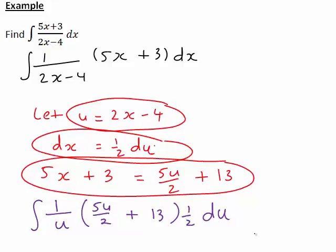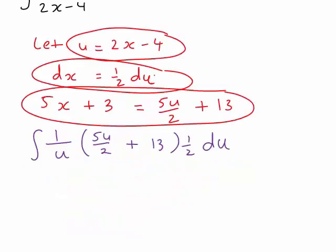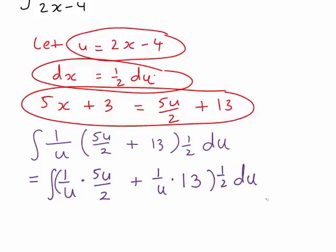We now have an integral, as required, fully in terms of u and du. Though it might not look like that initially, when we tidy this up, it will actually be a lot simpler to evaluate than the expression in its original form. To simplify, let's first expand the brackets. So integral of 1 divided by u times 5u divided by 2 plus 1 divided by u times 13, and all of that is still multiplied by 1 half du.